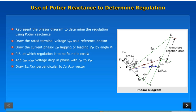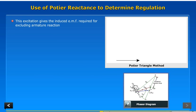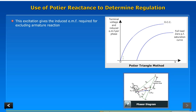Draw IPH XIPH perpendicular to IPH RAPH vector. Phasor sum of VPH rated, IPH RAPH. This excitation gives the induced EMF required for excluding armature reaction.